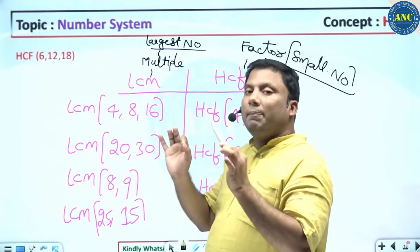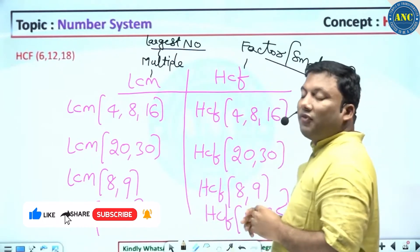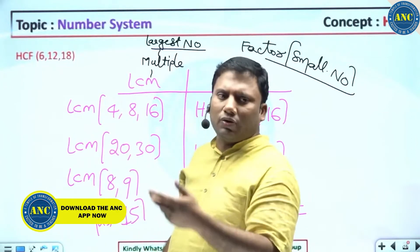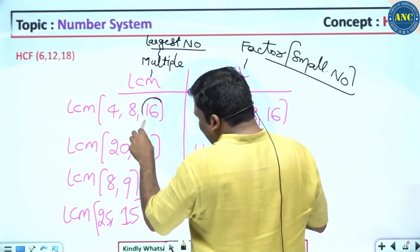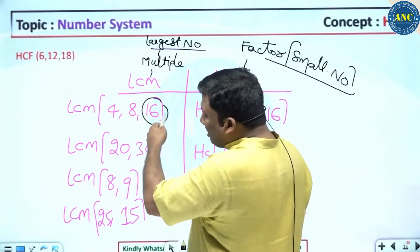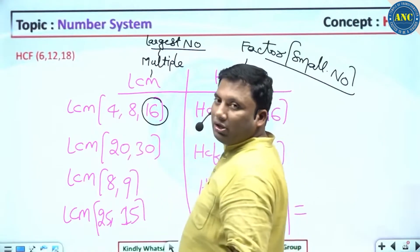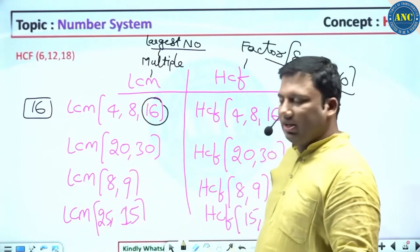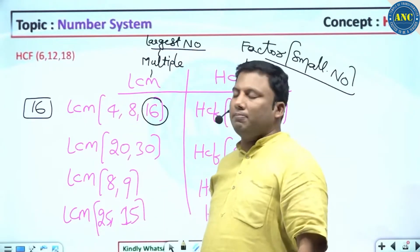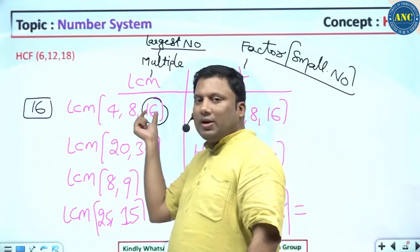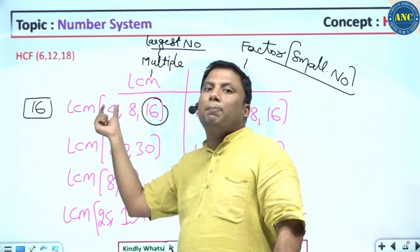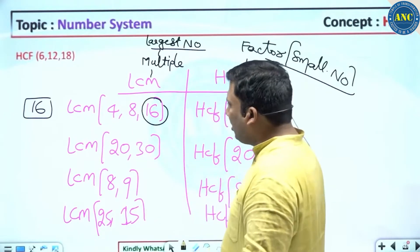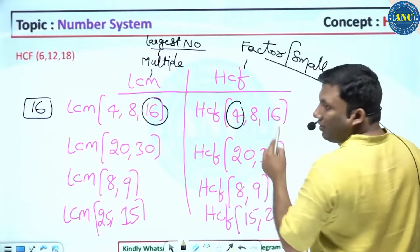In LCM, keep an eye on the largest value; in HCF, keep an eye on the smallest value. The multiples of 12 are 24, 36, 48, and so on — take the largest number. The largest number is 16. Check whether 16 is divided by every other number: 16 = 4 × 4, 16 = 8 × 2 — answer is 16. If the largest number is divisible by every other number, then the largest number is the LCM.